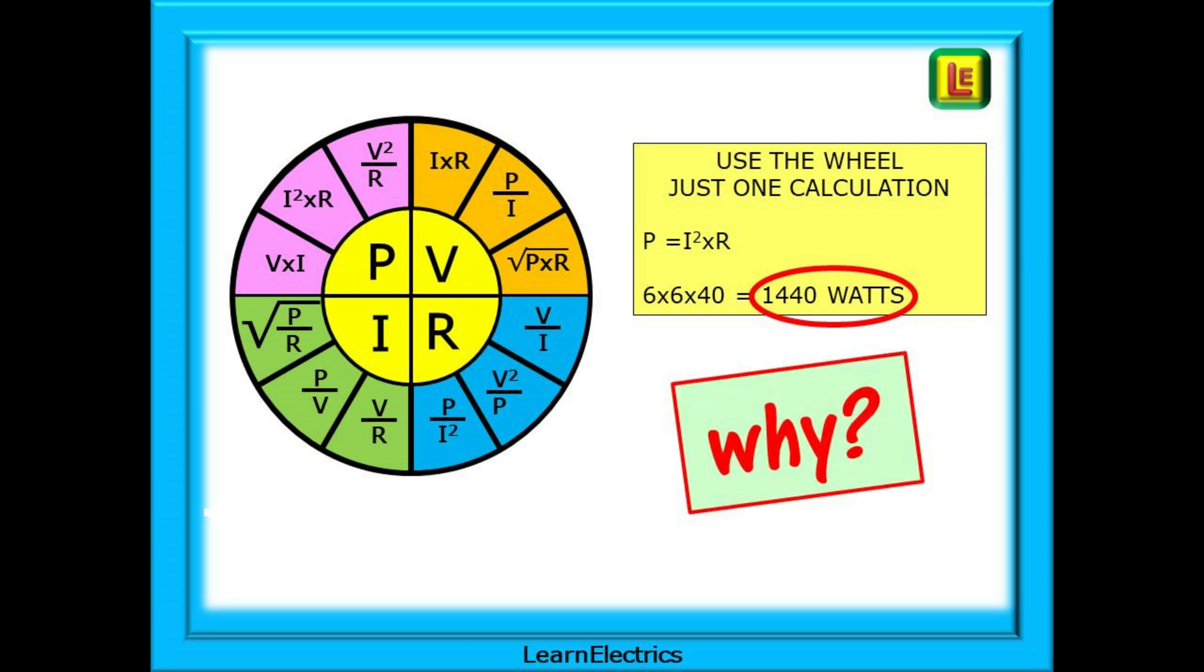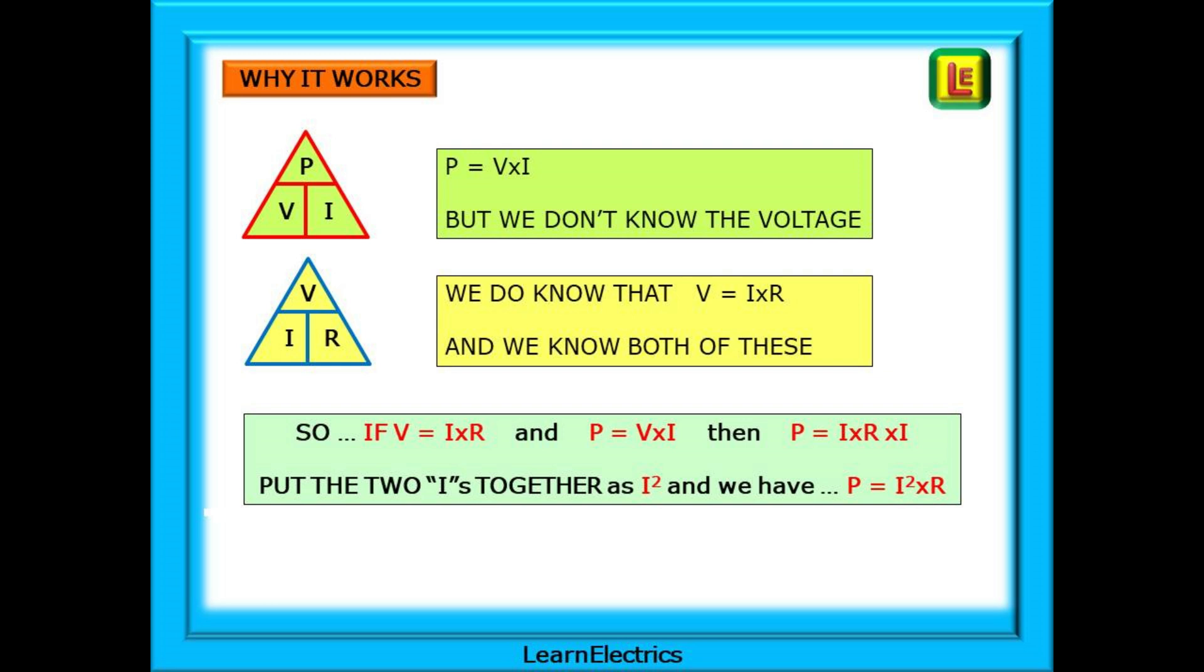But why does this work? Let's see. Power is equal to voltage times current, but we don't know the voltage. So off we go to the Ohm's Law triangle. Here, we find that the voltage is I times R, and we do know both of these. We can substitute I times R for V in the first equation. So, if voltage is I times R, and power is V times I, then P power can also be written as I times R times I. Put the two I's together as I squared, and we have P equals I squared times R. And that is how we can find the power without knowing the voltage.